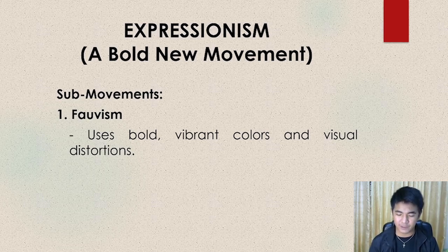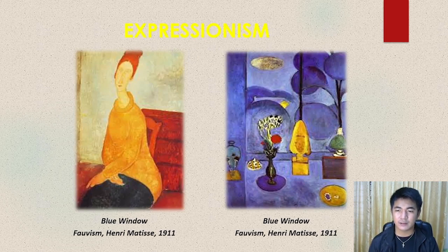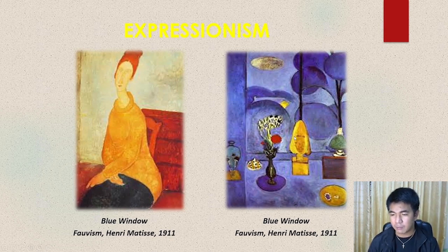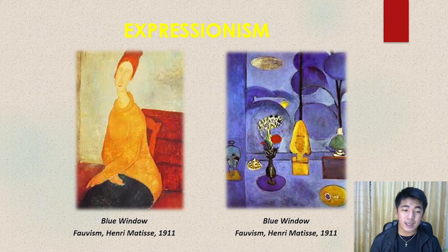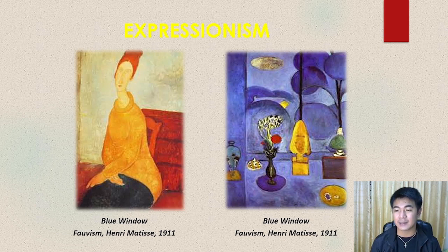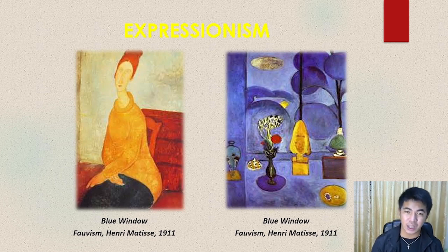Looking at an example of Fauvism: the moon is actually in the form of an oblong instead of a circle. There is a long shade here, and trees are simply rounded. On the other hand, looking at the blue window — if we consider proportion, one of the principles of art — the head is not proportionate to the shoulders, hips, and thighs. Because Fauvism is a distorted painting — the shapes, figures, and elements are distorted. It means these are not the ordinary shapes we usually see.